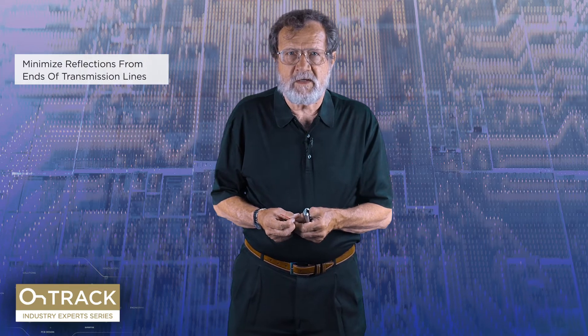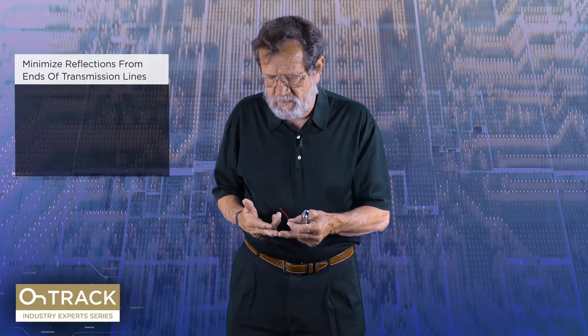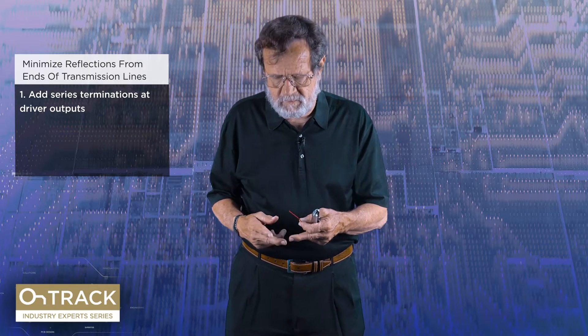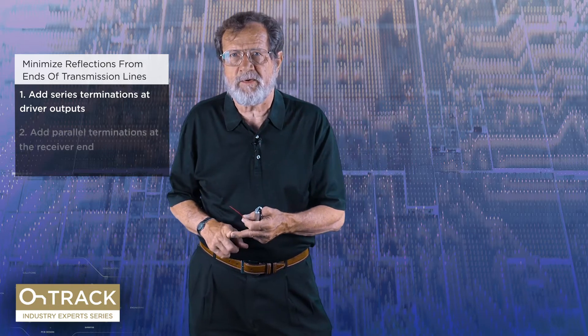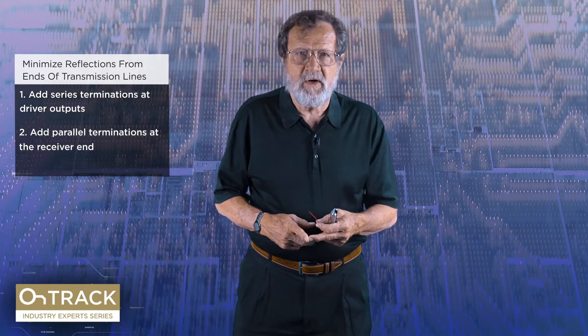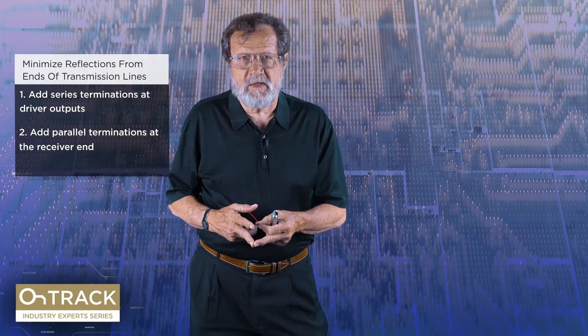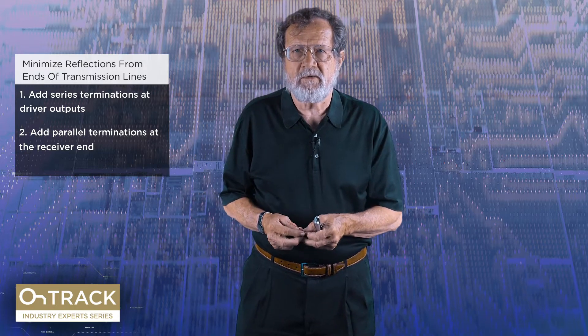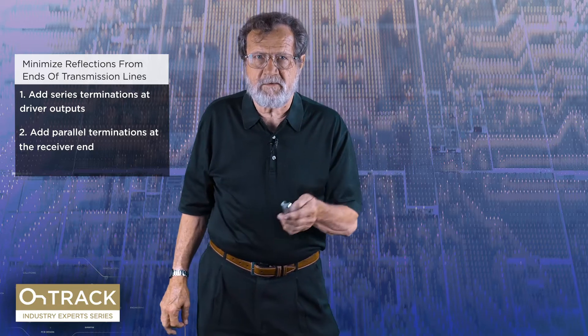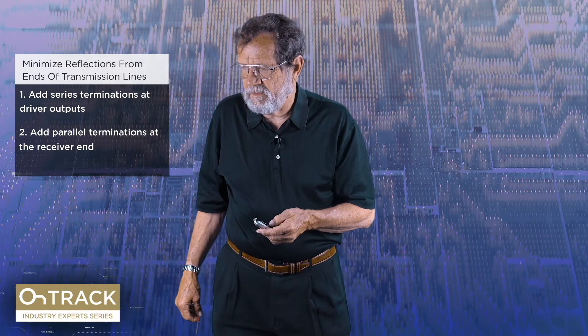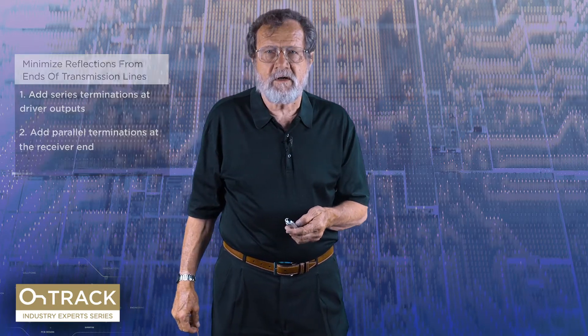Reflections off the end of the line are going to be controlled by one of two techniques. One would be termination at the driver output, called series termination. The other at the receiver end, called parallel termination. In CMOS, virtually everything is series terminated because parallel termination consumes way too much power. In fact the only place I see parallel terminations now is on the data lines of DDR and the ends of all the differential pairs.